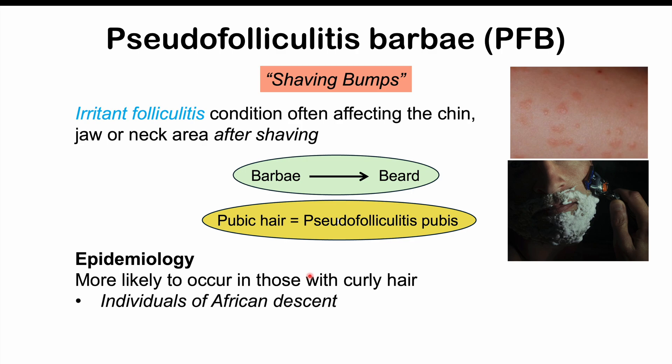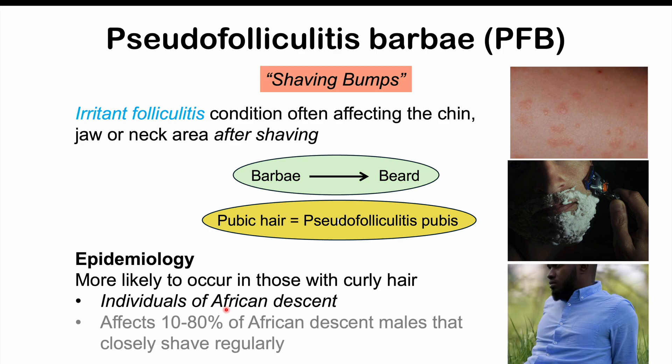More specifically, it's going to occur more commonly in patients of African descent. Because of the coarseness and curliness of their hair, individuals of African descent are at a very high risk for pseudofolliculitis barbae, and in fact it can affect anywhere from 10 to 80% of African descent males who closely shave regularly.